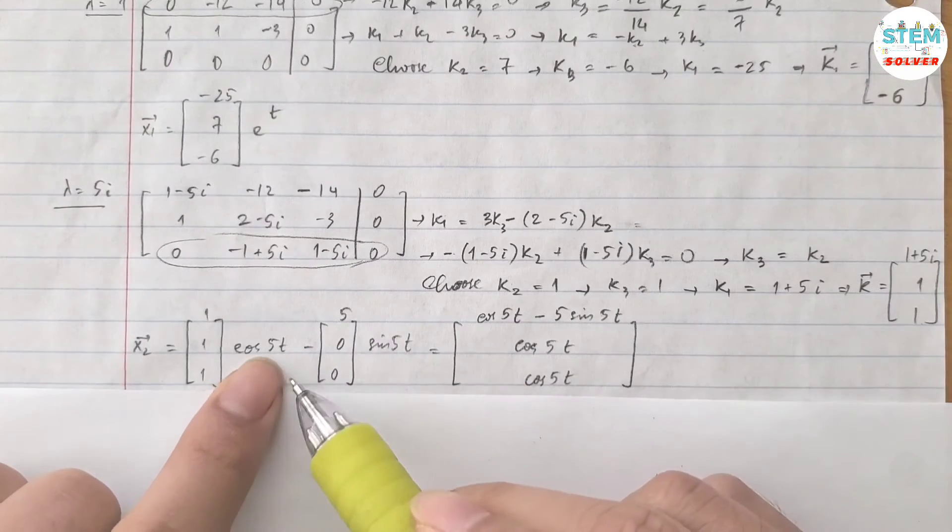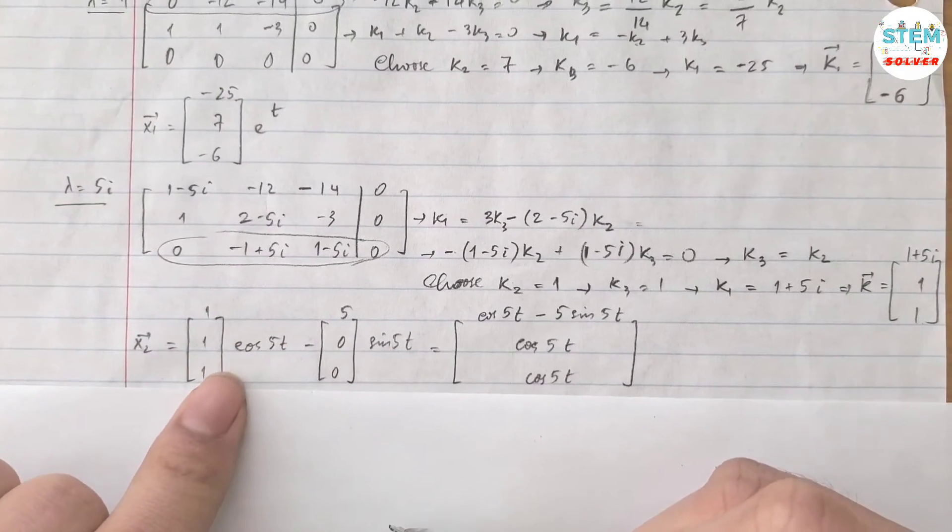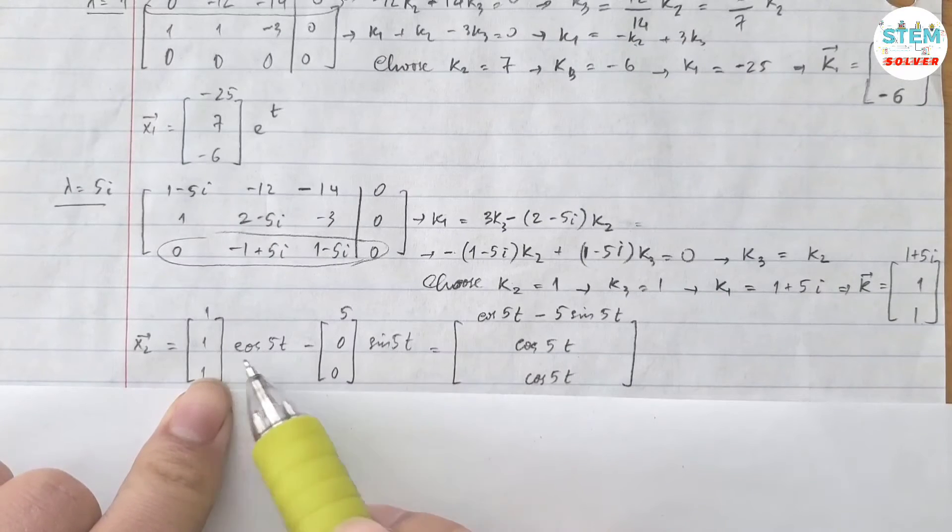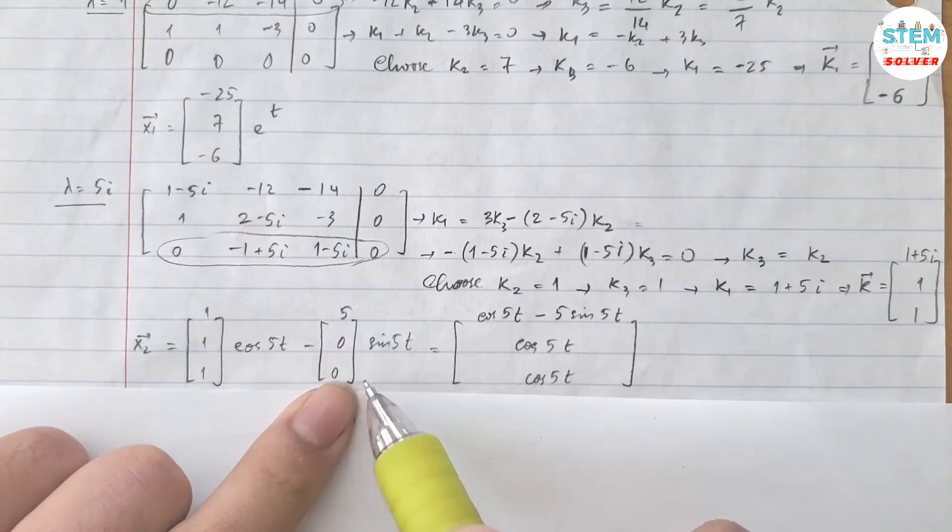And then you multiply this in and then combine them together. That gives you this matrix. So basically you just add the matrix together.